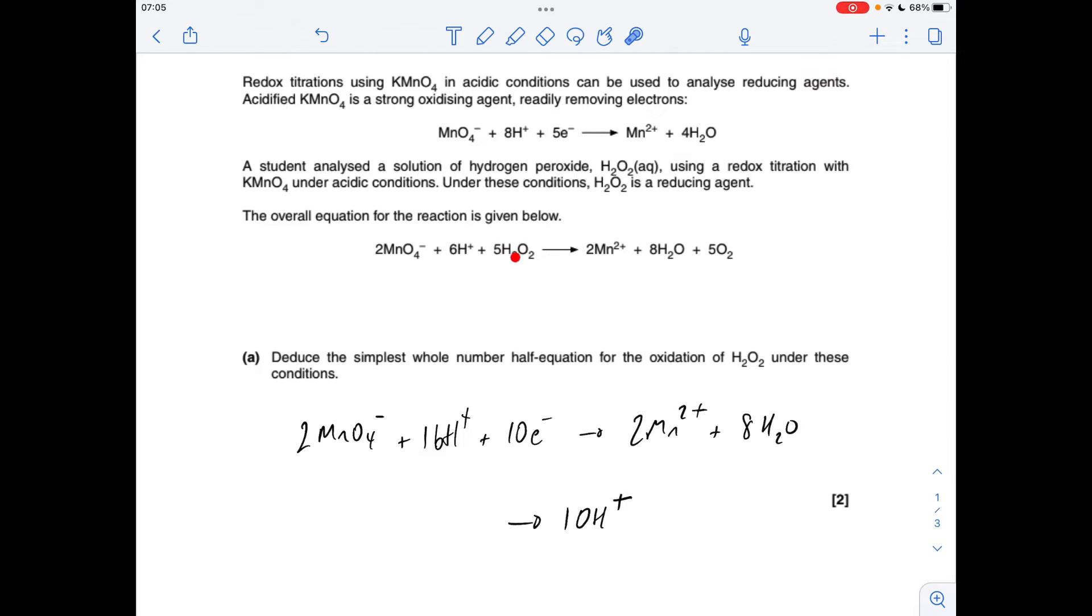Next thing, 5H2O2, so obviously that needs to go there. Obviously there's no electrons in the overall equation, so we're going to need 10 electrons on this side to deal with those. So we'll move on to the products now. So 2Mn2 plus 8H2O.